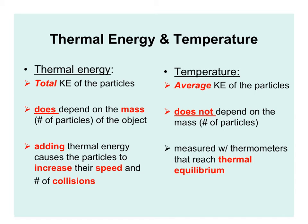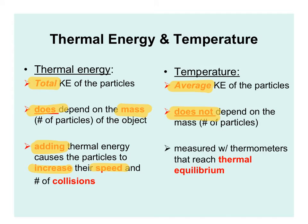To recap: thermal energy is the total kinetic energy of the particles, whereas temperature is the average kinetic energy. Thermal energy does depend on the mass or number of particles of an object. Temperature does not, because it's an average — it doesn't matter how many particles there are. When you add thermal energy, such as heating a pot of water on the stove, it increases the speed of the atoms and molecules and increases the number of collisions.